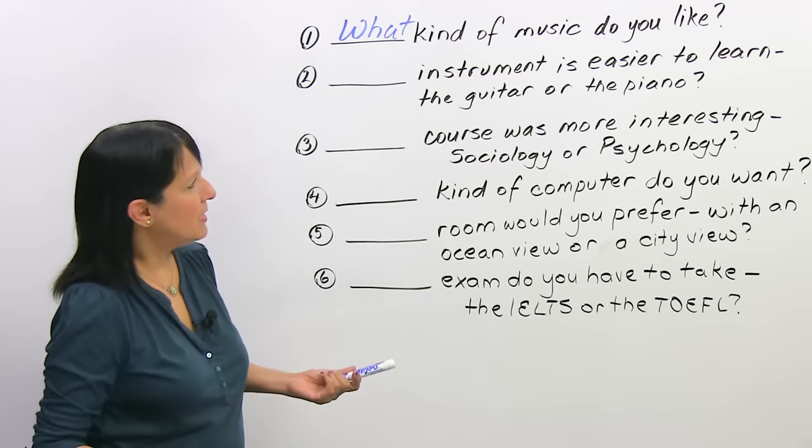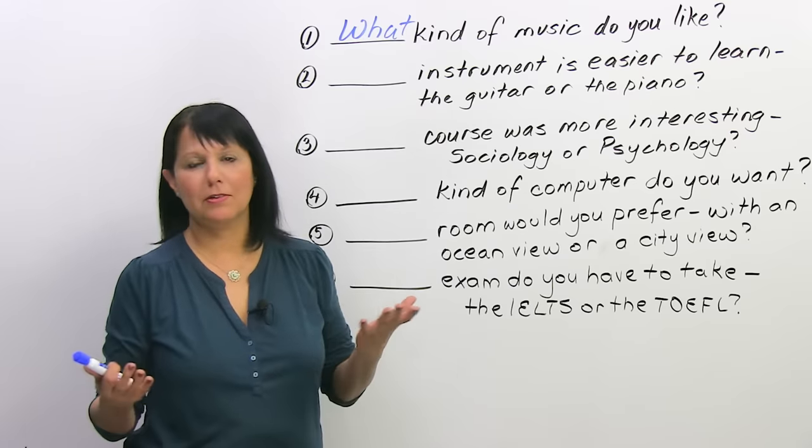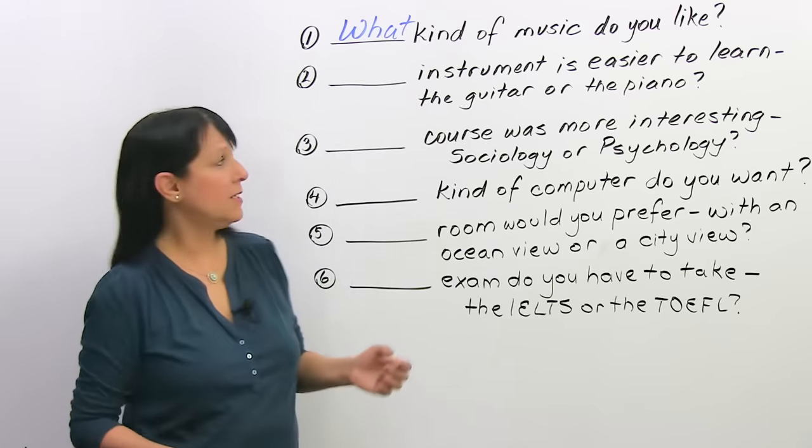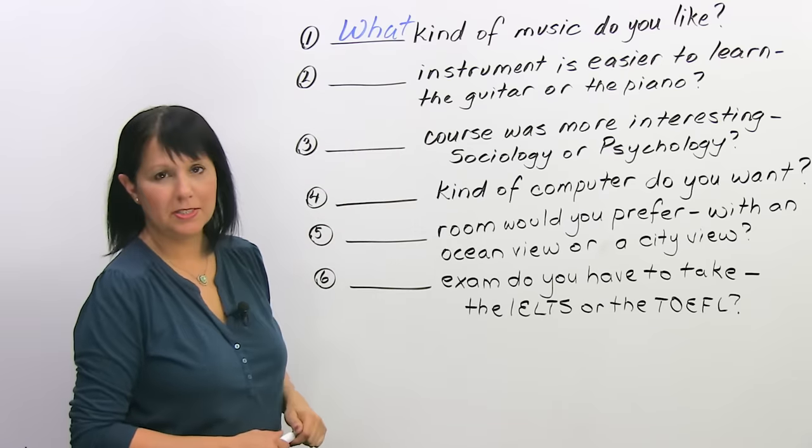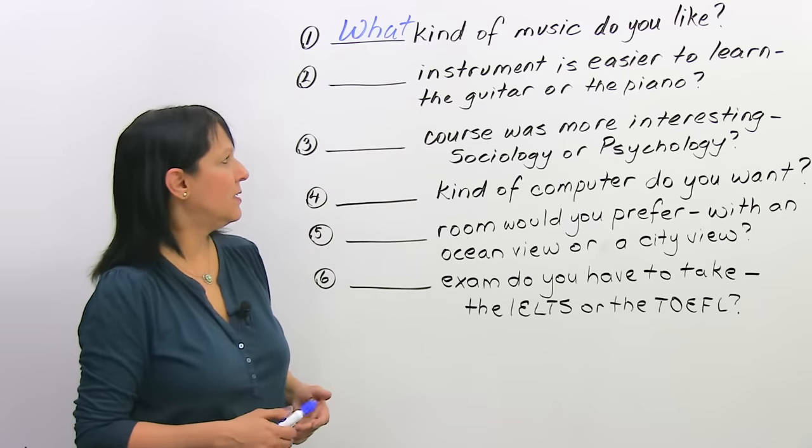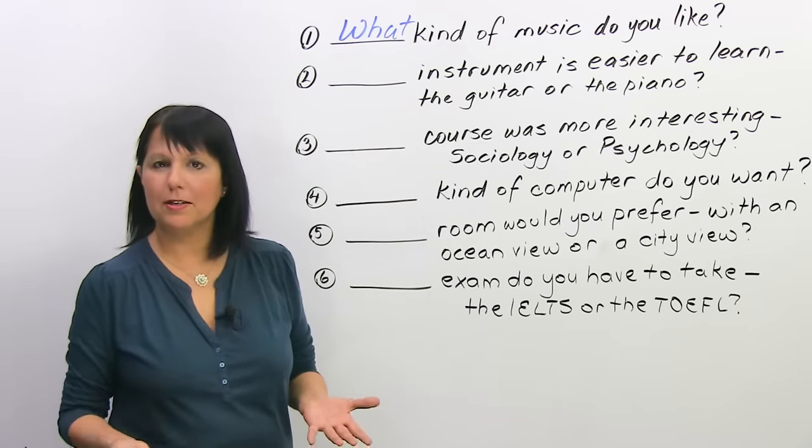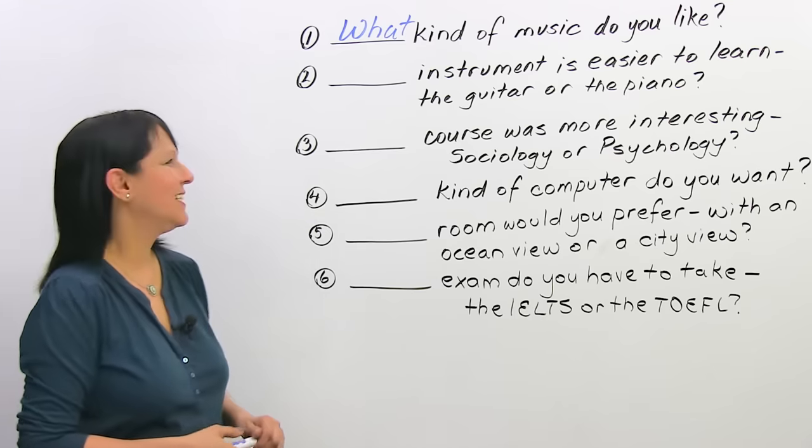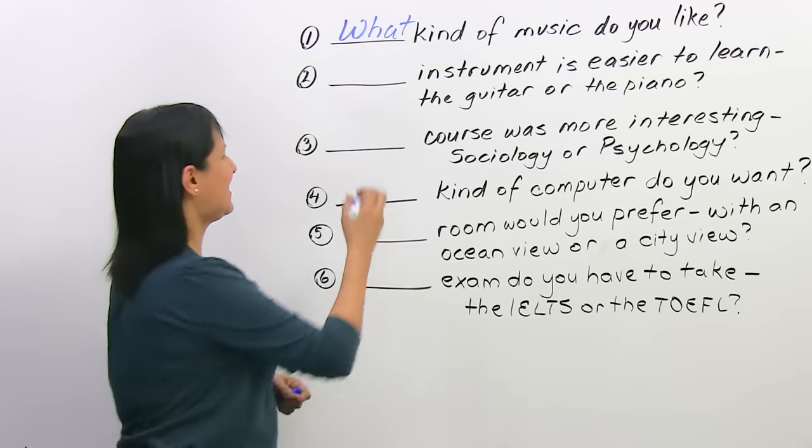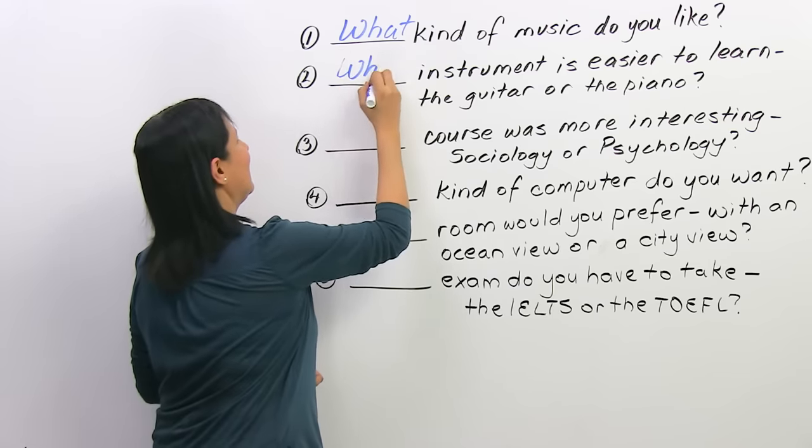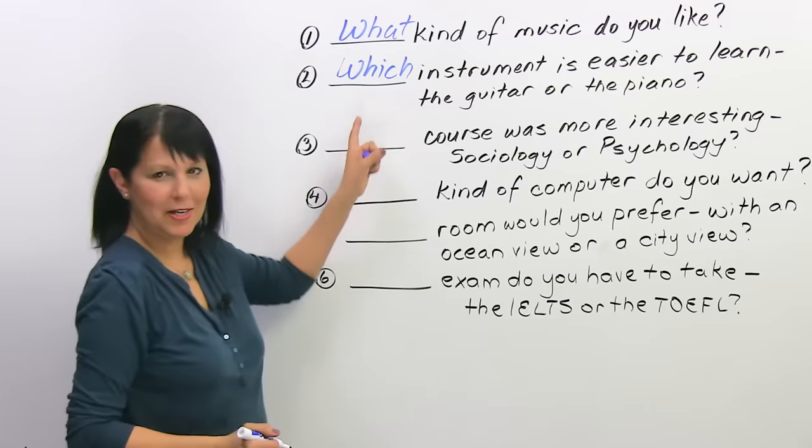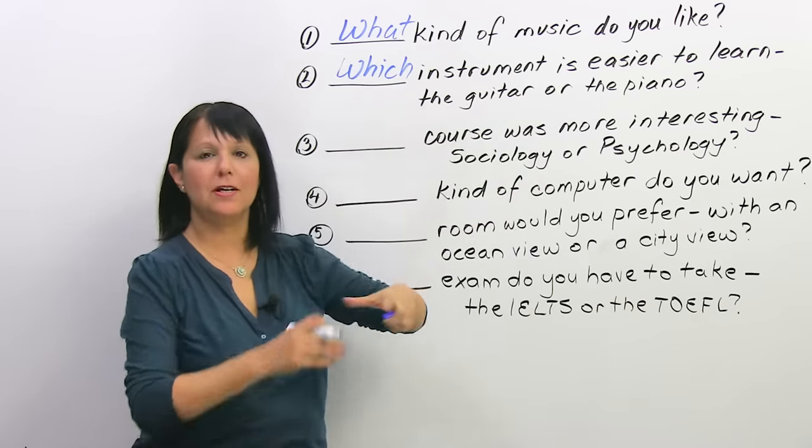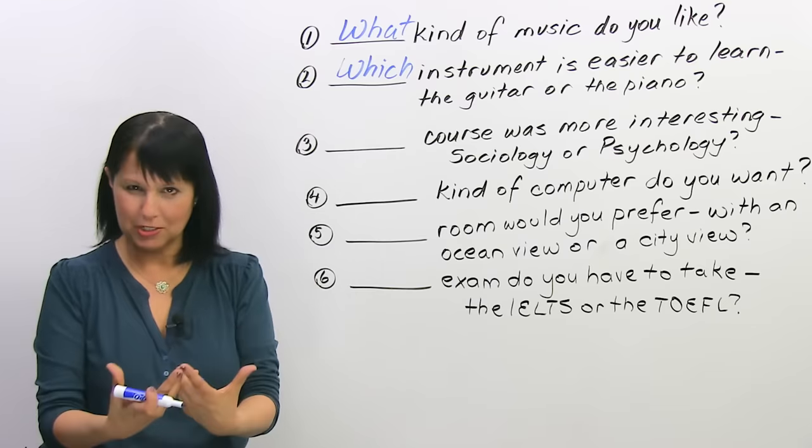The next one. Let's say you're thinking about learning how to play an instrument. So, you go to a music store and you ask the salesperson 'blank instrument is easier to learn, the guitar or the piano.' What do we say there? I think we should say 'which'. Which instrument is easier to learn? The guitar or the piano? Again, limited choice, so we're going to say 'which'.